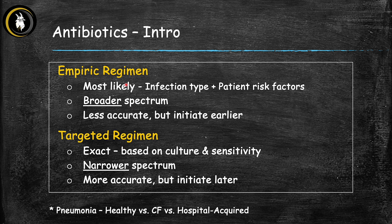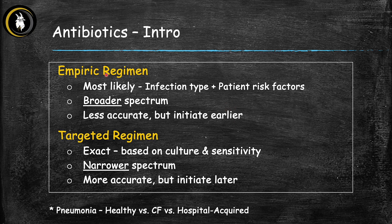Empiric regimen means that we're treating the most likely pathogen — it's an educated guess based on the infection type, the patient's risk factors, and statistics about the most likely bacteria and which antibiotic it's sensitive to. Because we don't know exactly which bacteria is involved and may need to cover multiple types, we generally use broader spectrum antibiotics. This is less accurate, but allows us to initiate treatment earlier without waiting for culture results, which takes at least one or two days.